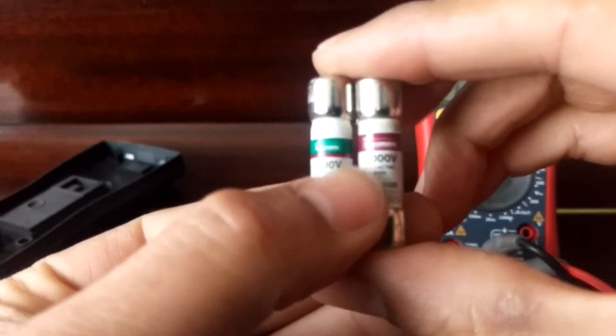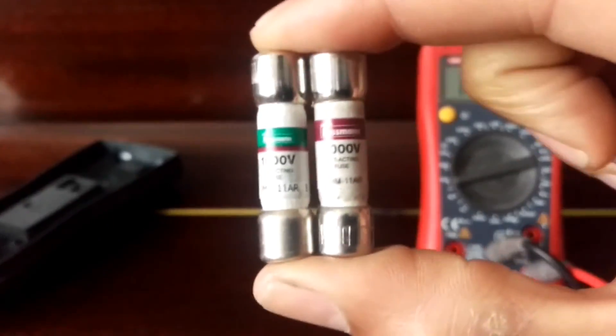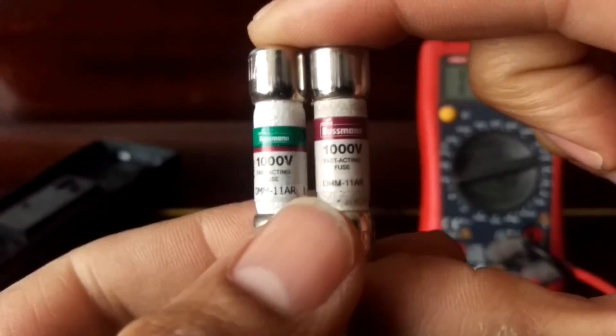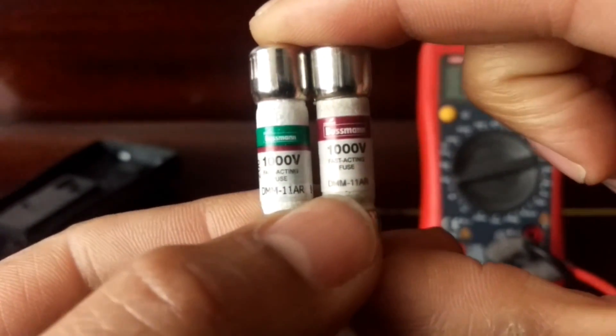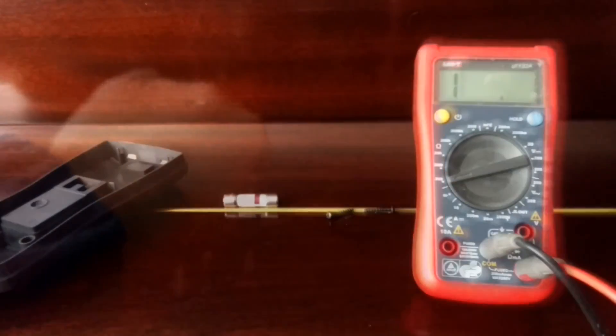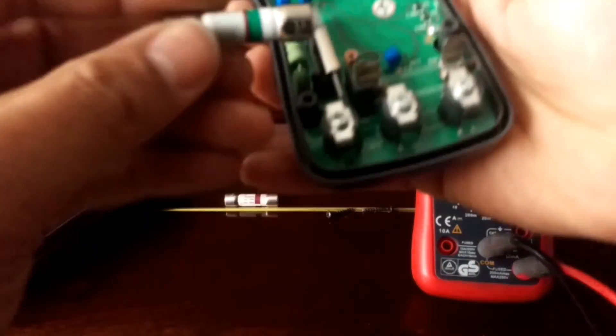And don't scrimp with these fuses. They're not cheap. I managed to get these for about £8 each, but you can be paying up to £20 for these. It's a 1000 volt 11 amp fuse. But check the spec for your particular meter. Don't scrimp on them because it's your safety.